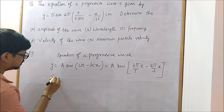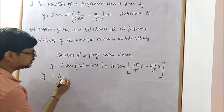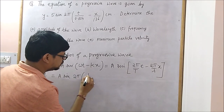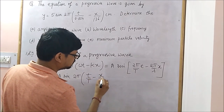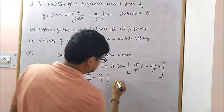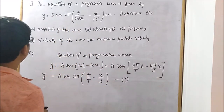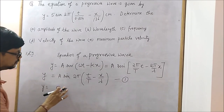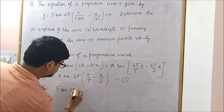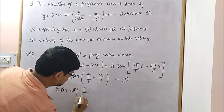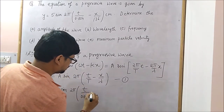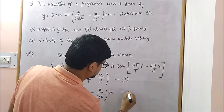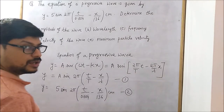So we can write the equation as y equal to a sine of 2 pi times the quantity t by T minus x by lambda. Let this be equation 1. And we have been given the equation y equal to 5 sine of 2 pi times t by 0.004 minus x by 136 centimeter. Let this be equation 2.